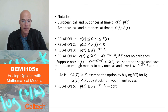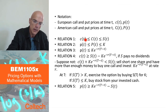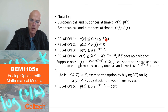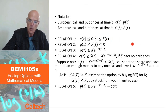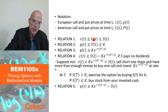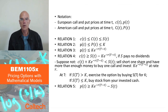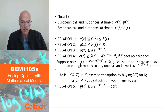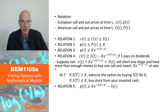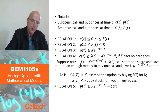The first relation says that the price of a European call at any time t cannot be larger than — it's less than or equal to — the price of the corresponding American call, and both of them have to be less than the price of the underlying at time t. Why is this? In the American version the buyer can exercise at any time before maturity; in the European version the buyer can only exercise at maturity. So the buyer of an American option has more flexibility, and therefore the American option has to have at least as much value as the European version.